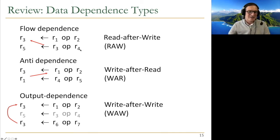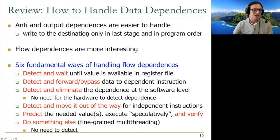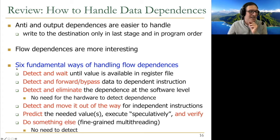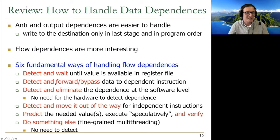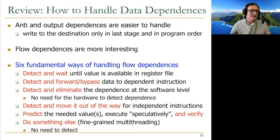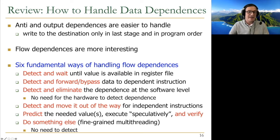There are six fundamental ways of handling flow dependencies. Anti- and output dependencies are easier to handle in a pipeline — write to the destination only in the last stage and in program order, and they don't cause a problem. For flow dependencies, we said the first three ways require detection. You detect and stall until the value is available in the register file — this is the lowest performance approach. Second, detect and forward or bypass the data to the dependent instruction — higher performance.